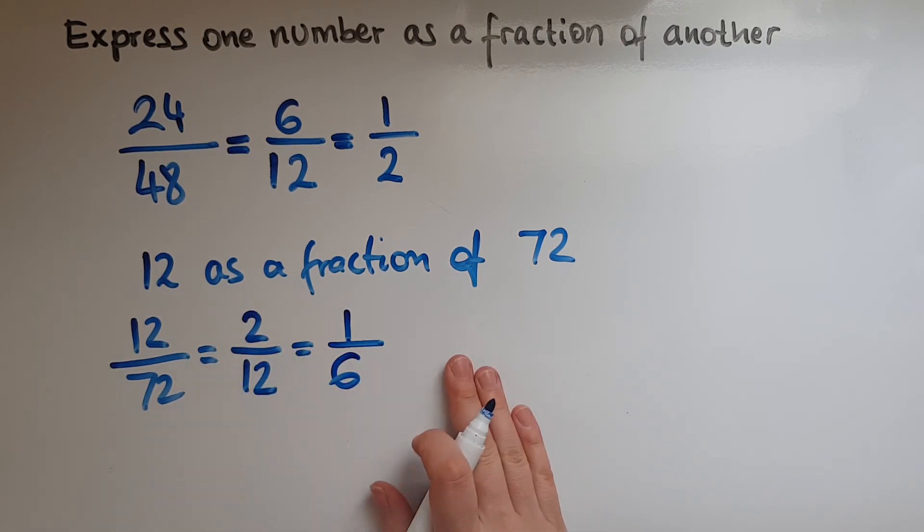12 is 1 sixth of 72. All you have to do when expressing one number as a fraction of another is write down what is that number you're talking about out of what total, what original price, what original quantity, and then simplify it further to get to a simple fraction.